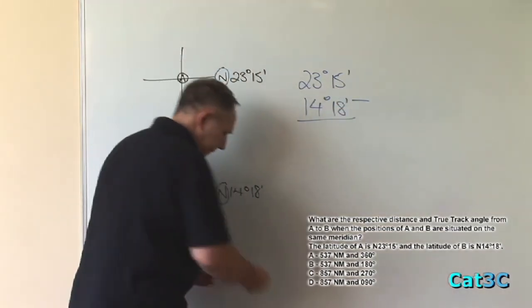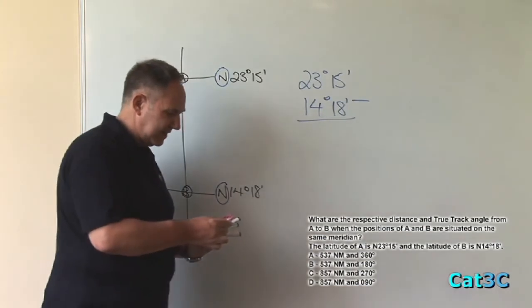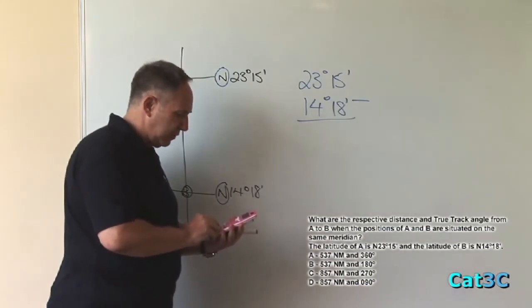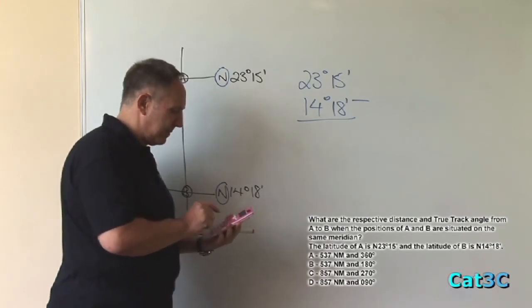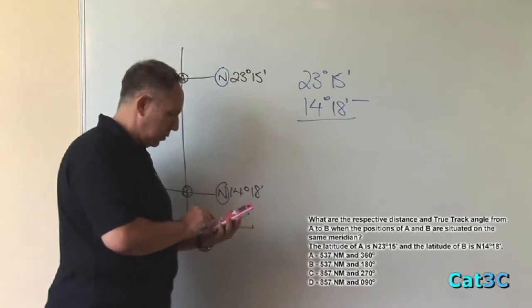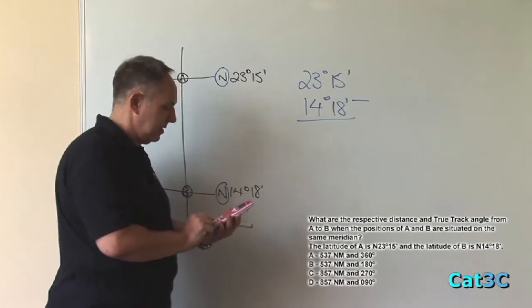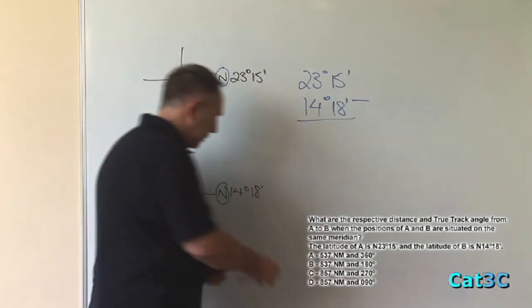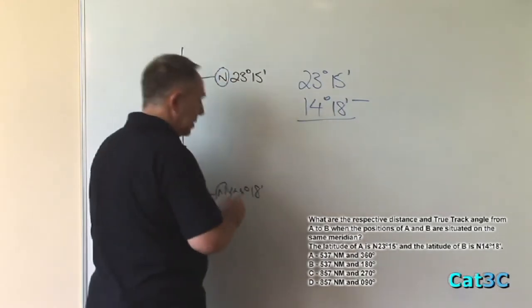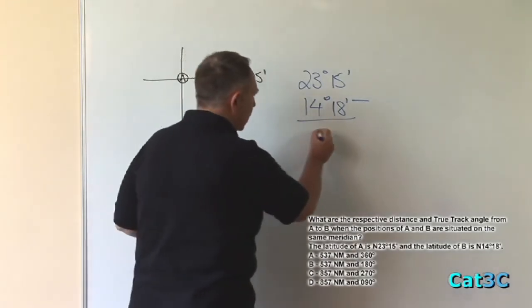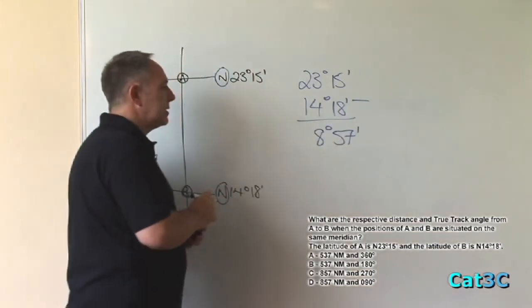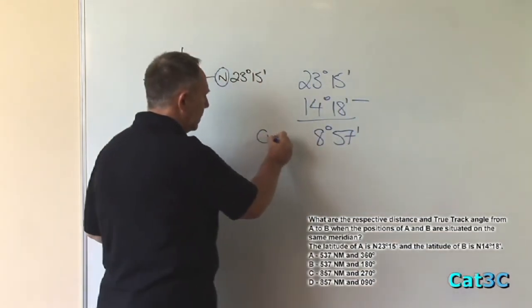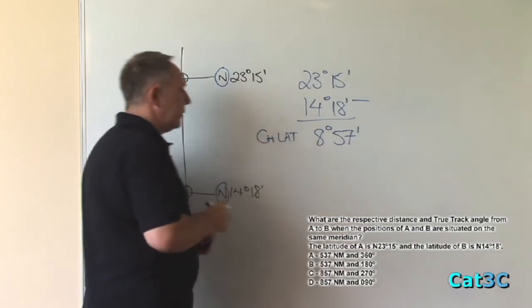I'm going to do this on the calculator. So on the calculator, I enter 23 DMS button, 15 DMS button minus 14 DMS 18 DMS equals and it gives me 8 degrees and 57 minutes. So the change of latitude is 8 degrees and 57 minutes.